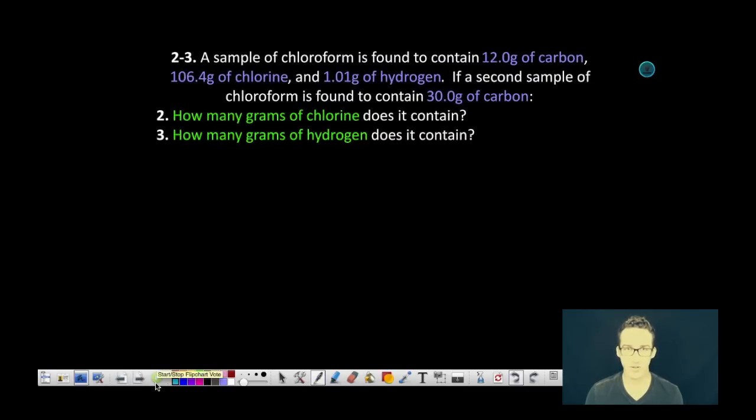Question numero dos and tres. It says a sample of chloroform is found to contain 12.0 grams of carbon, 106.4 grams of chlorine, and 1.01 grams of hydrogen. If a second sample of chloroform is found to contain 30.0 grams of carbon, question two, how many grams of chlorine does it contain? And question three, how many grams of hydrogen does it contain? Well,